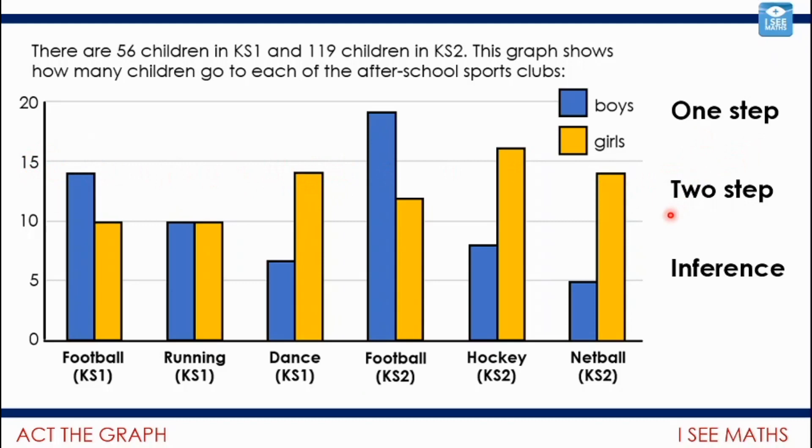For a two-step question, I might need to take two pieces of information to be able to answer the question. Say, for example, how many more boys than girls go to Key Stage 2 football club? I would need to look at both and then work out the difference. Or if I was saying how many more children in Key Stage 2 go to clubs than Key Stage 1 clubs, I need to take lots of readings from this graph and there'd be different numbers of steps.